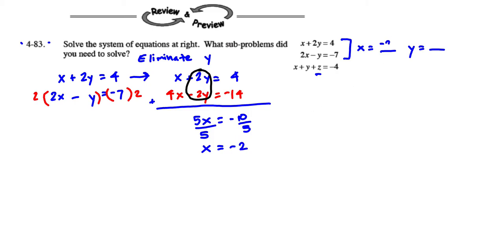So right now I know x is negative 2. I can substitute it back in to figure out what y is going to be. Let's do that here. Let's say x plus 2y equals 4. So I'm going to put my negative 2 in for my x here. So I have negative 2 plus 2y equals 4. I'm going to add 2 to each side here.